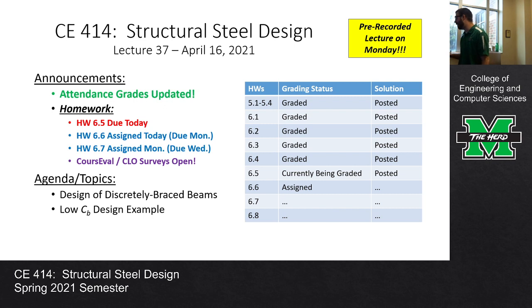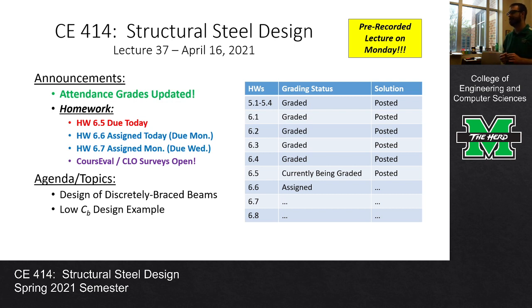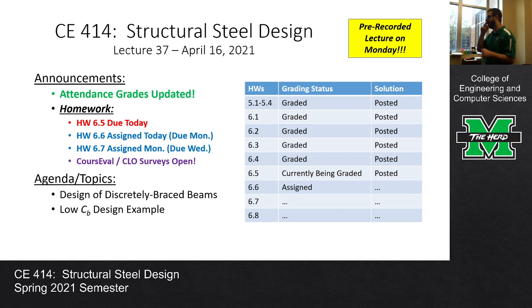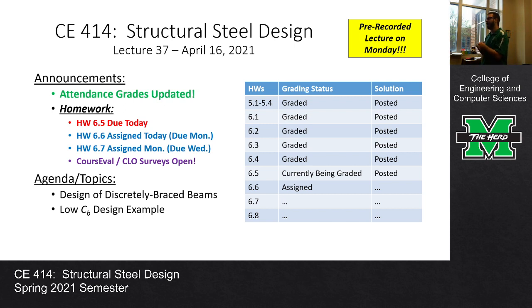On the slide you can see we're going to have a pre-recorded lecture on Monday. I have a meeting I can't avoid. Today we're going to do our first discretely braced beam design example focused on a beam with a low CB value. The one recorded for Monday is for a high CB value. The process is exactly the same - the only difference is for high CB values, there's a potential that you have to iterate a little bit more, and that's the perfect example to pre-record.